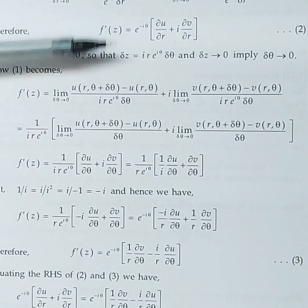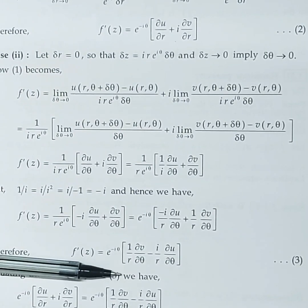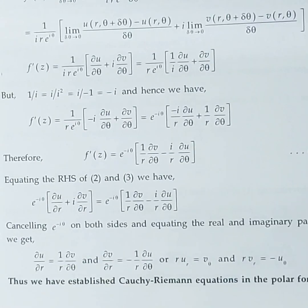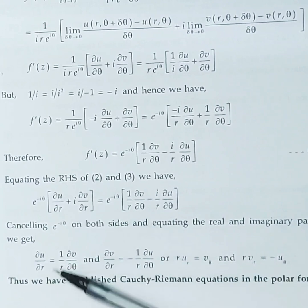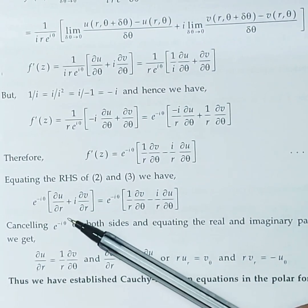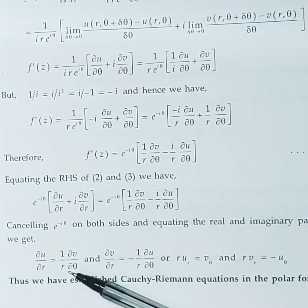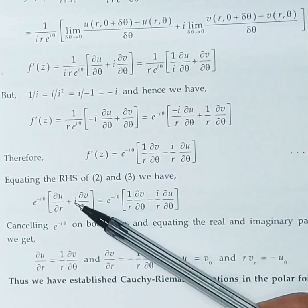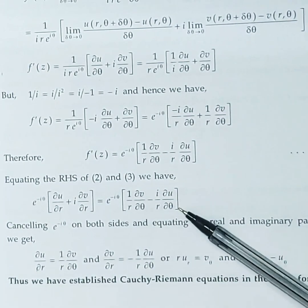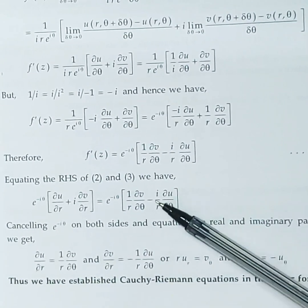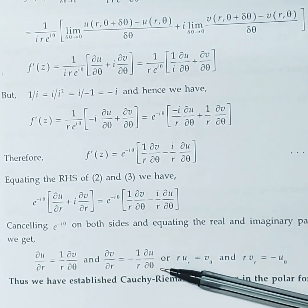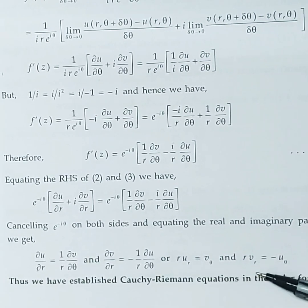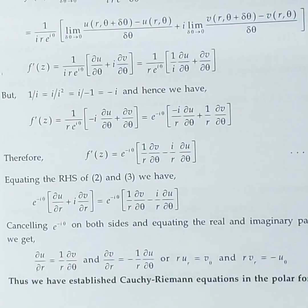Now we compare the two results. Since the function is analytic, both expressions for f'(z) must be equal. The e^{-iθ} factors cancel. Comparing real parts: ∂u/∂r = (1/r)·∂v/∂θ. Comparing imaginary parts: ∂v/∂r = −(1/r)·∂u/∂θ. Thus we obtain the CR equations in polar form.